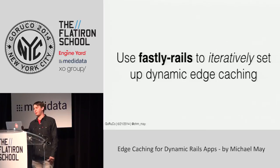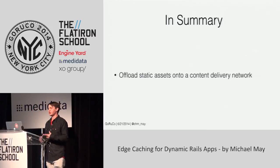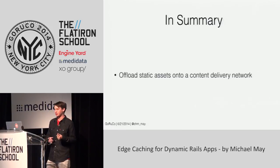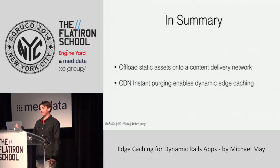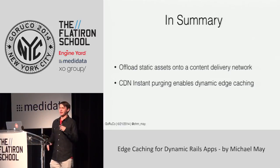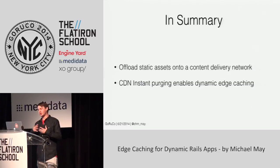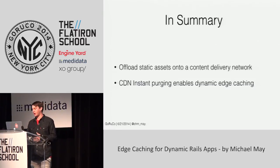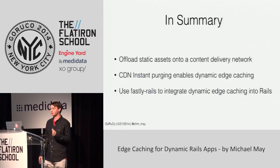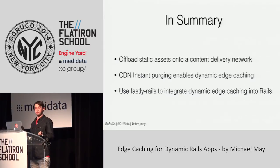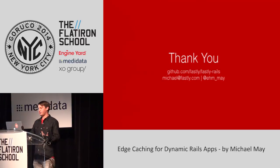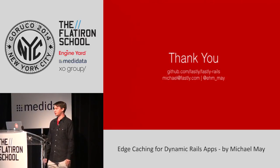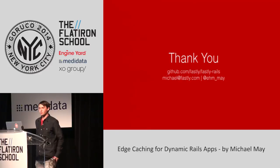To wrap up and hit some key points: if you're not already offloading static assets onto a content delivery network, you should do that — things like the asset pipeline make it super easy, and you can get really great performance gains just from that alone. We talked about instant purging and HTTP keepalive — purging is what enables dynamic caching to happen on the edge. If you decide to add this to your Rails apps, take advantage of all the helpers in Fastly Rails. Thank you so much for listening, and thanks to all the organizers of GoRuCo.